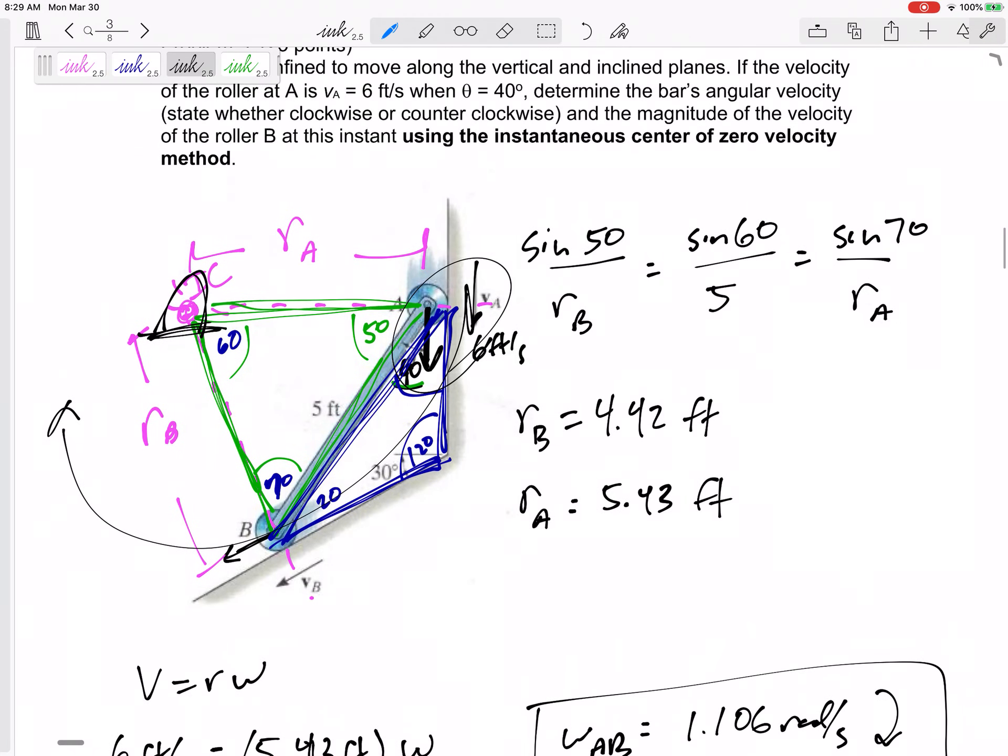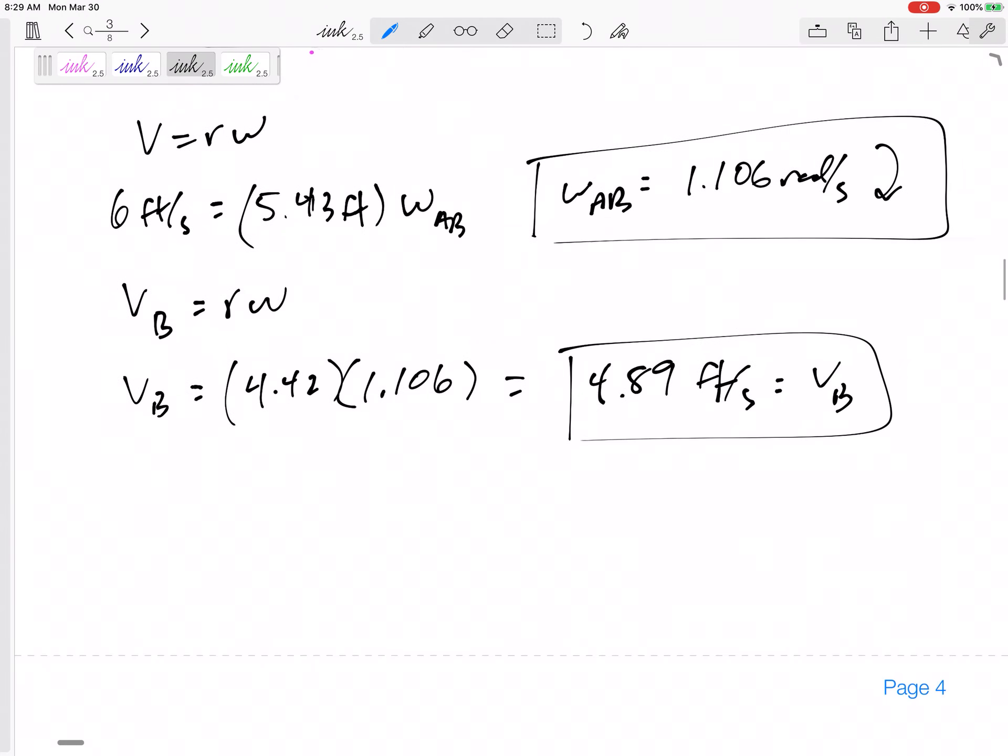Now, this one may have been too easy. This one may have been too easy. Remember, all those problems where we did V equals R omega, V equals R omega, V equals R omega, and maybe we started with this one, and we snaked our way through, ended with this one.